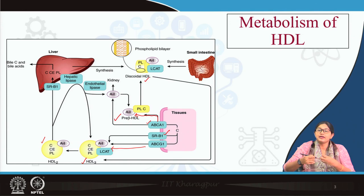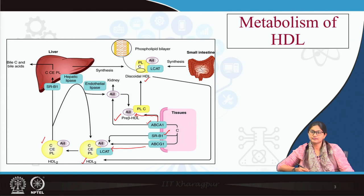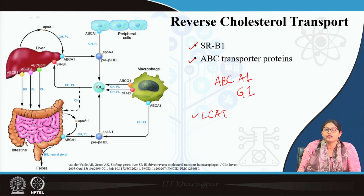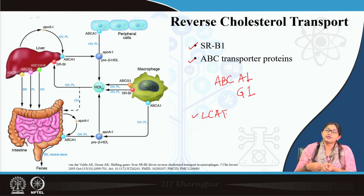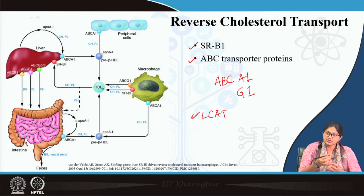This is important for reverse cholesterol transport. The pre-beta HDL is a cholesterol-poor, triacylglycerol-depleted particle, so it has the maximum tendency to take up cholesterol from extra-hepatic tissues. HDL3 molecules are also important for uptake of peripheral cholesterol. Apart from these receptors, the enzyme LCAT — lecithin cholesterol acyl transferase — is also important. The transferred cholesterol from extra-hepatic tissue to HDL is converted to cholesterol ester by LCAT, forming the hydrophobic core.